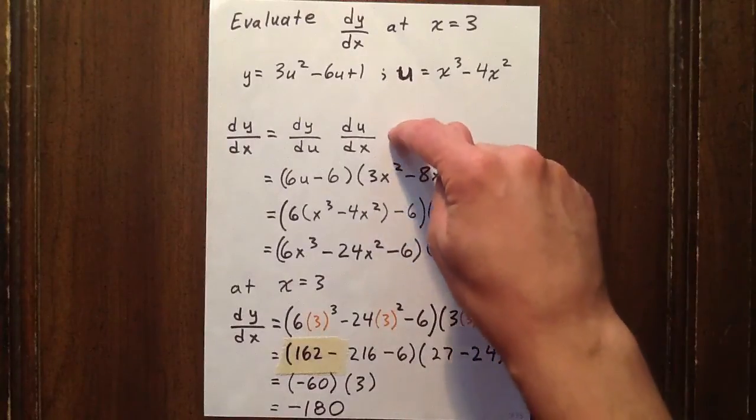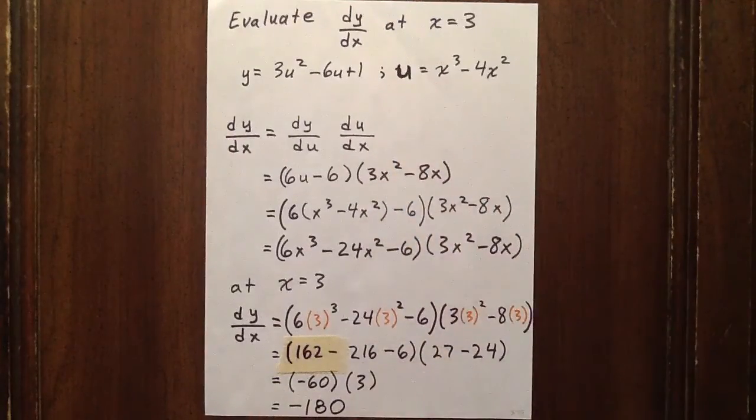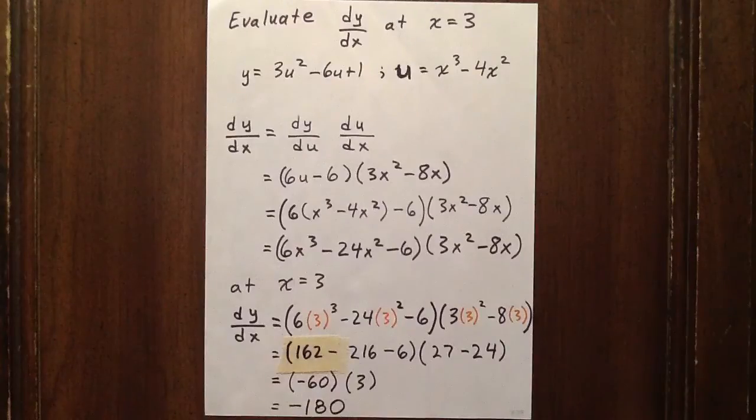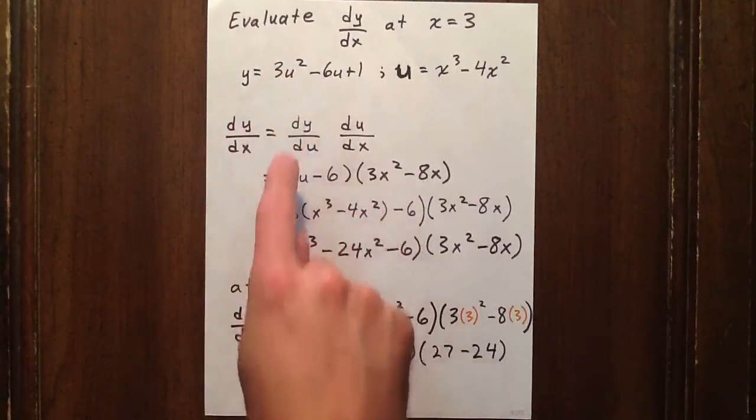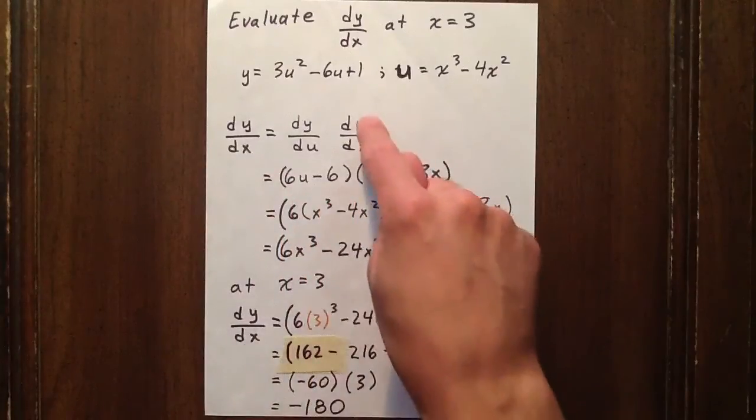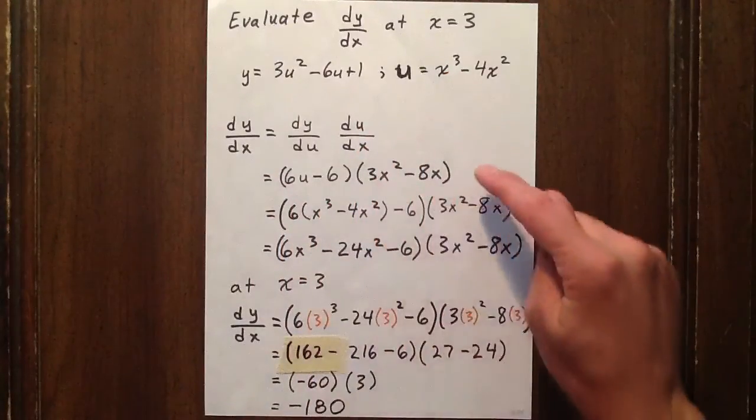And if you can remember this, then the question becomes relatively straightforward, actually. dy/du is just 6u minus 6, and du/dx is 3x squared minus 8x.